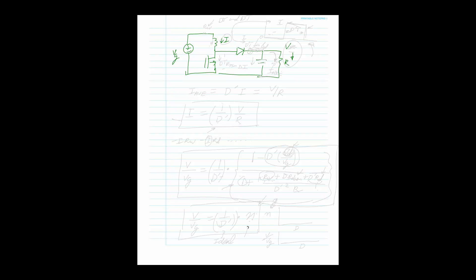The output current is the current flowing into the load. This current only flows during the D' period — during DT it is zero, then it jumps up to the inductor current value I during D'T. The waveform is approximately a square wave with a downward slope during D'T.